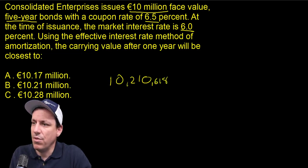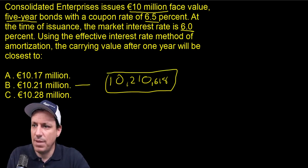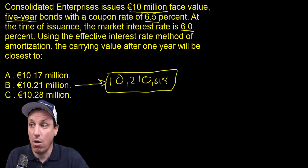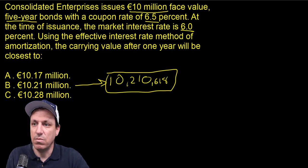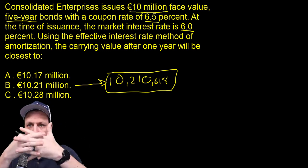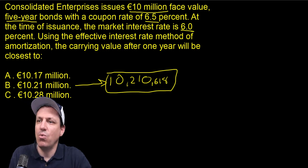Now there is something we can do to save time right here. You see how this matches the recording value — a lot of people are going to say, 'Oh, that's the answer,' because the numbers match and it must be right. But the question asks for the carrying value after one year using the effective interest rate method of amortization.